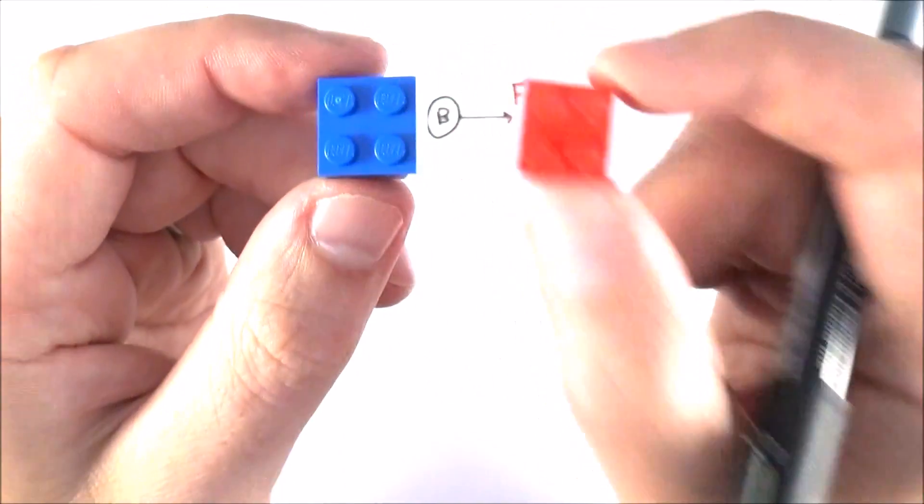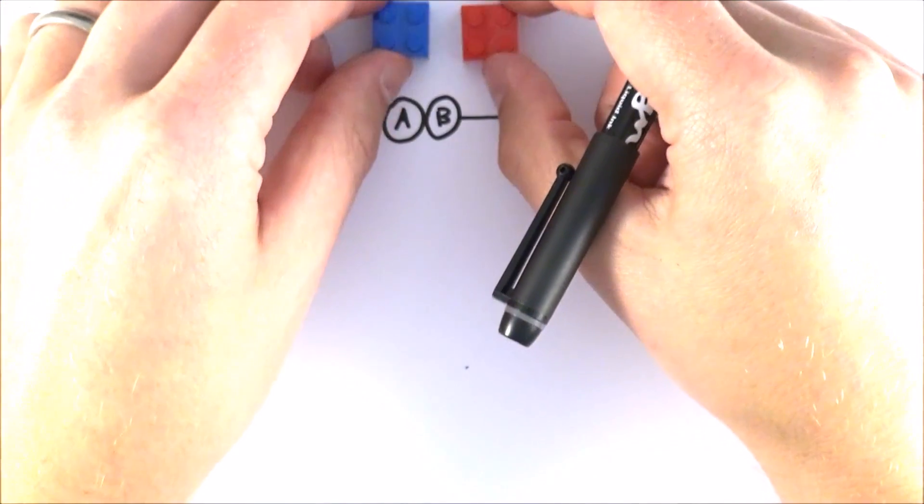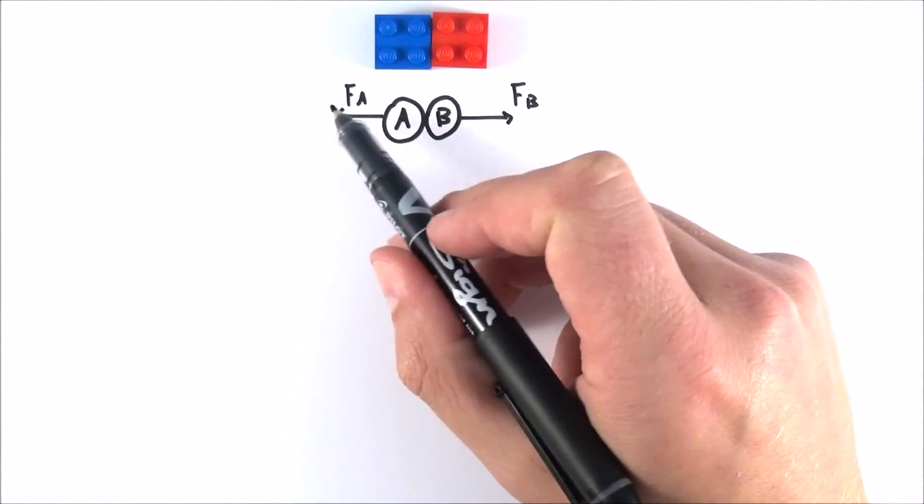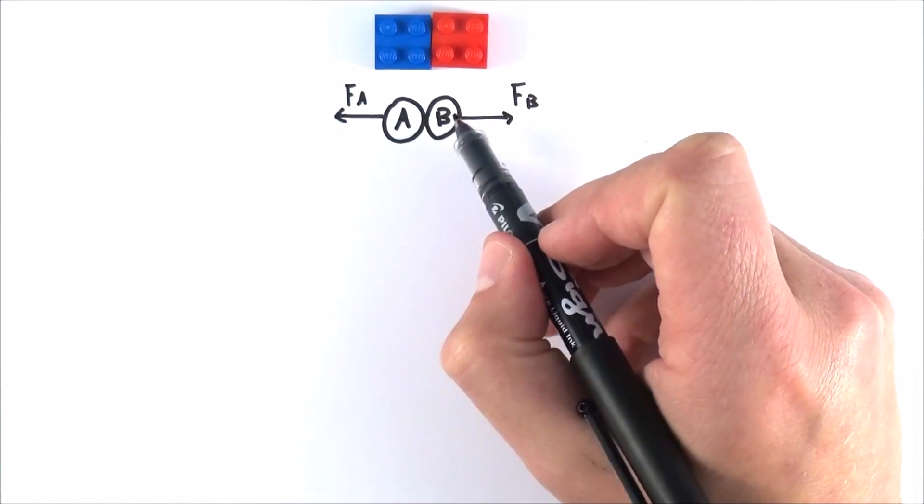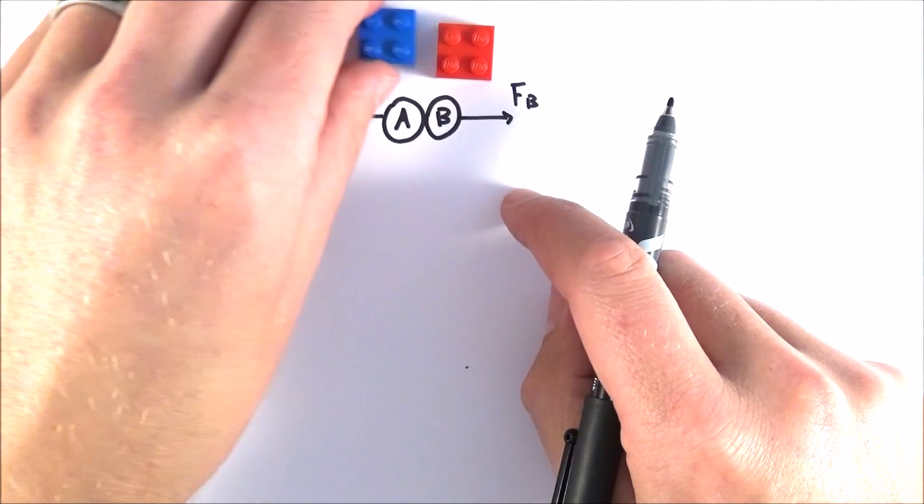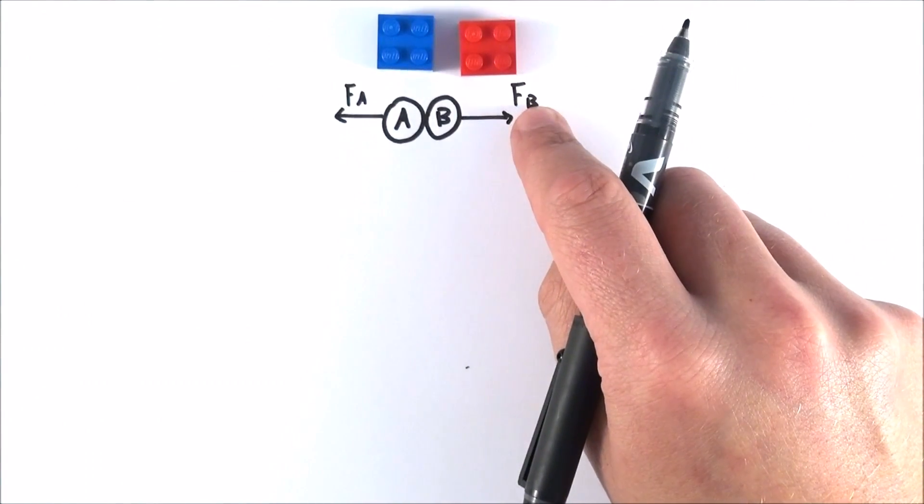I'd like you to imagine objects A and B and what we're going to look at is a collision between these two objects. When they collide, object A will experience a force FA due to the action of object B, and likewise object B, because it's being hit by object A, is going to experience a force in this direction which we're going to call force FB.